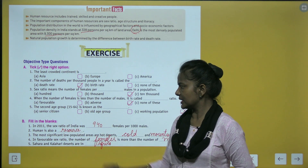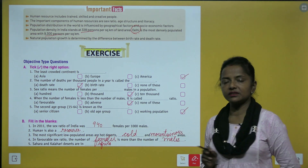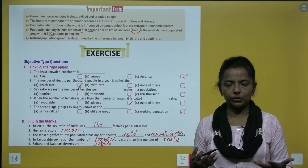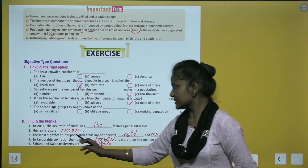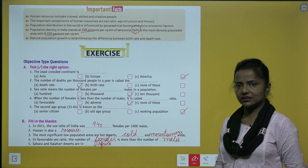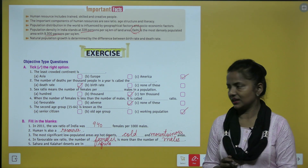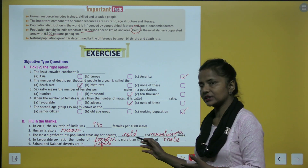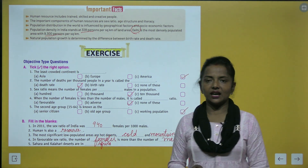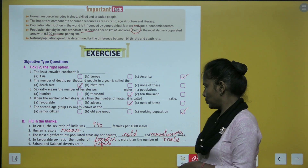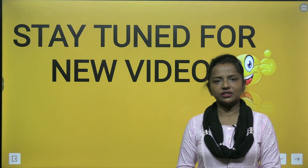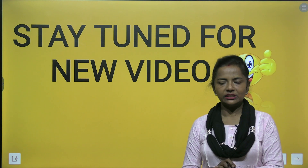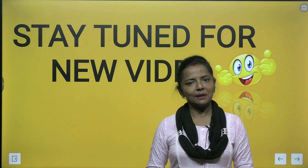Fill in the blanks answers: In 2011, the sex ratio of India was 940 females per thousand males. Human beings are also a resource. The most significant low-populated areas are hot deserts, cold, and mountainous areas. In favorable sex ratio, the number of females is more than males. The Sahara and Kalahari deserts are in Africa. Stay tuned for the next video — we will meet again with a new chapter.